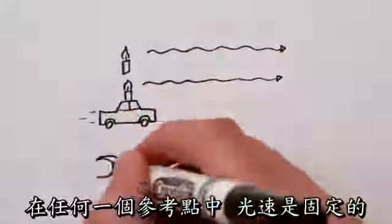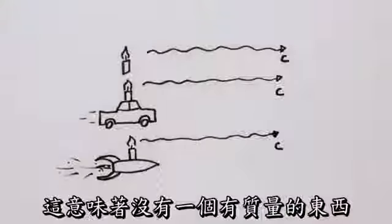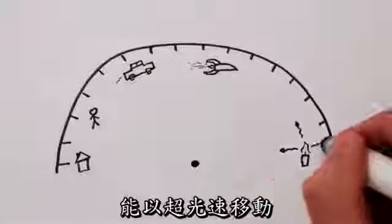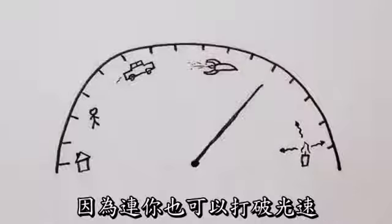All that Einstein said was that light moves at the same speed in every reference frame. And while this implies that nothing with real mass can move faster than light, it doesn't impose a cosmic speed limit.